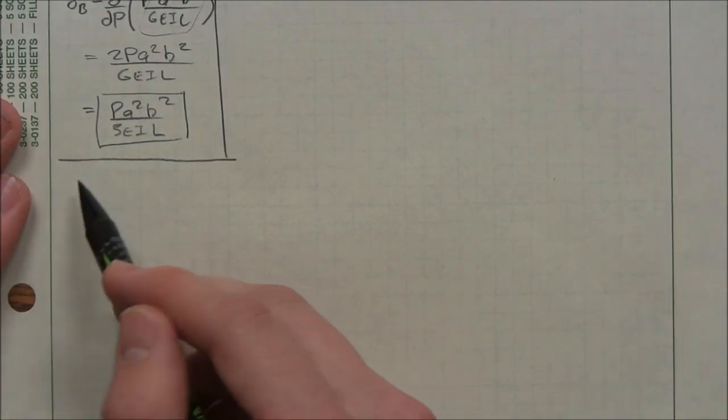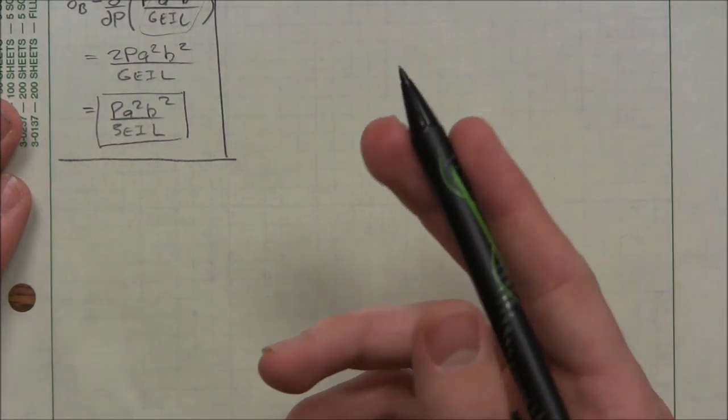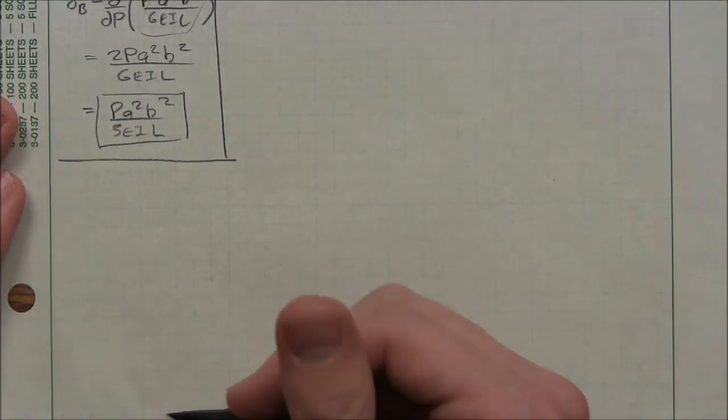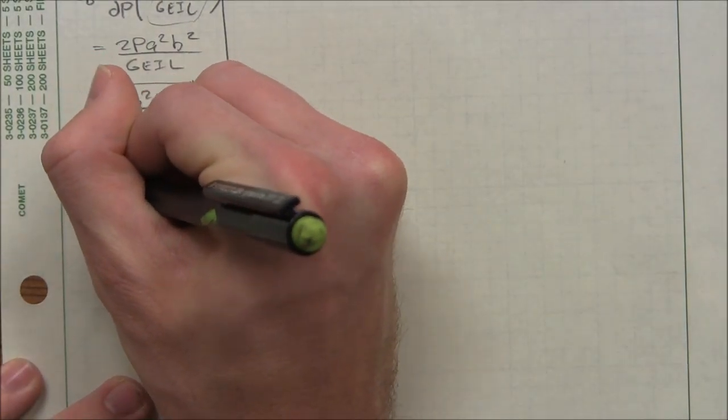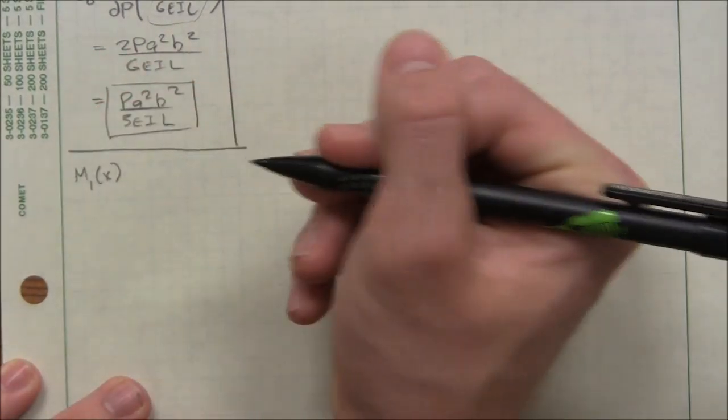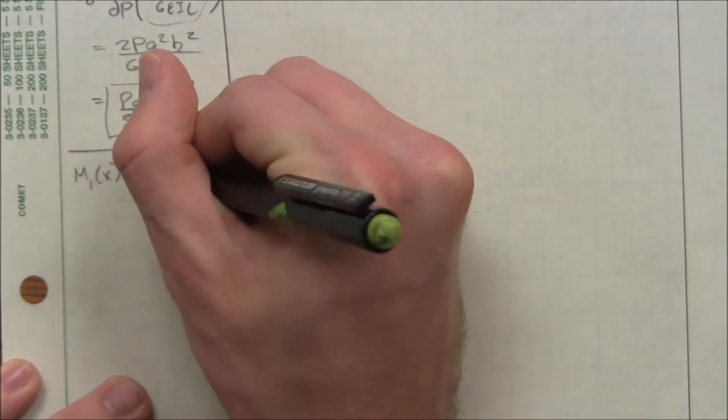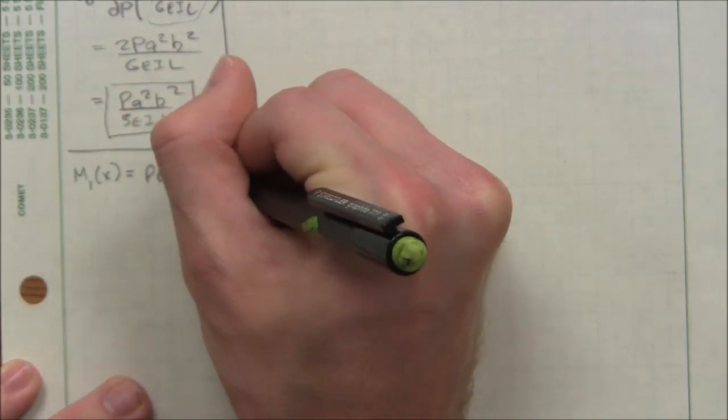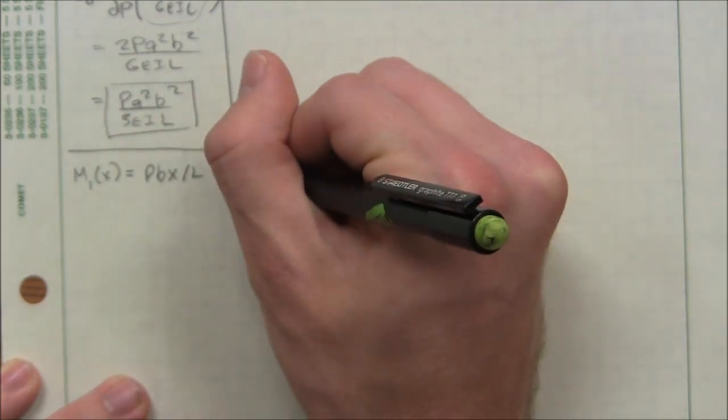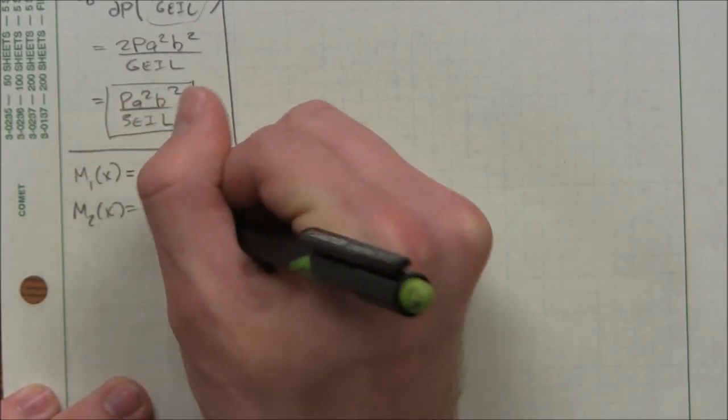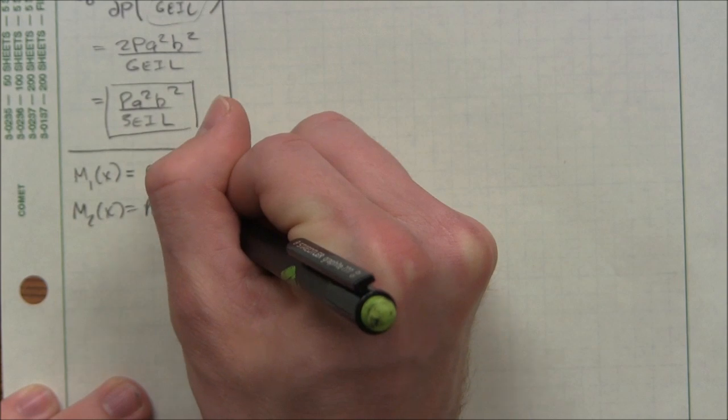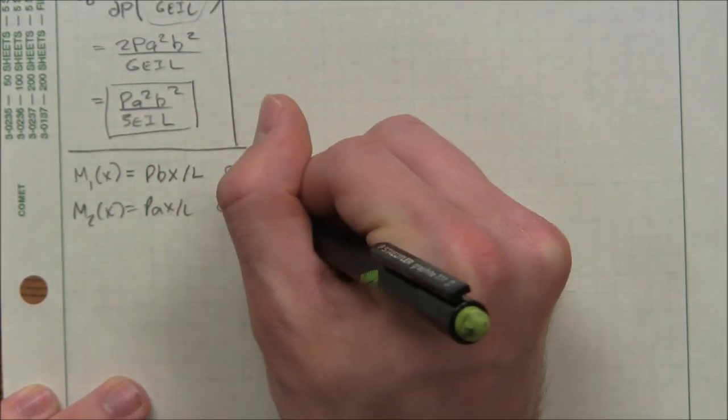So the modified theorem, you don't start with the entire strain energy. You have to go back to our moment equation. So I'm copying from the last example. M1 of X equals PBX over L, and that was applied from 0 to A. M2 of X equals PAX over L, which is applied from 0 to B.